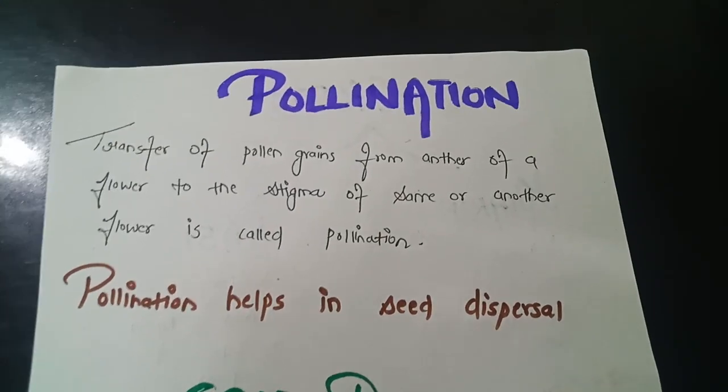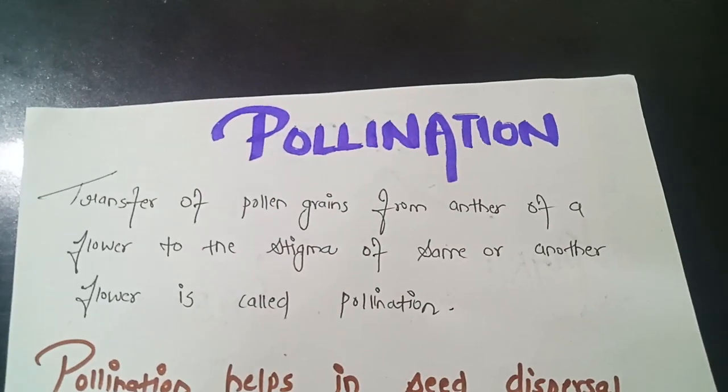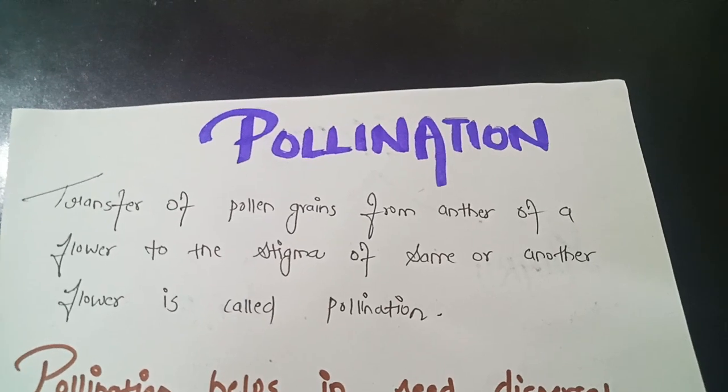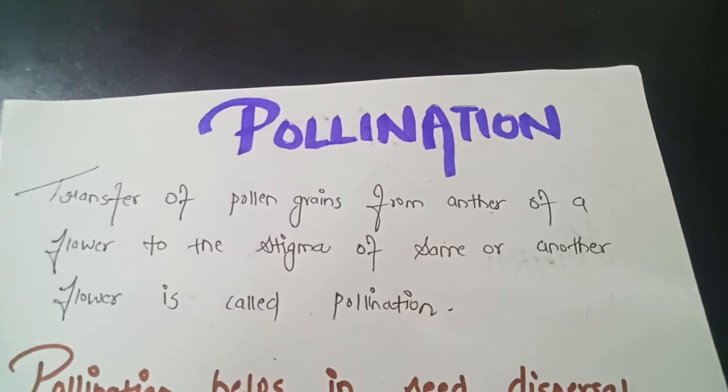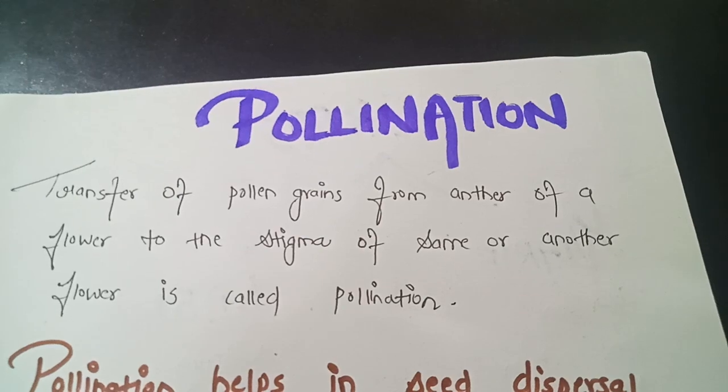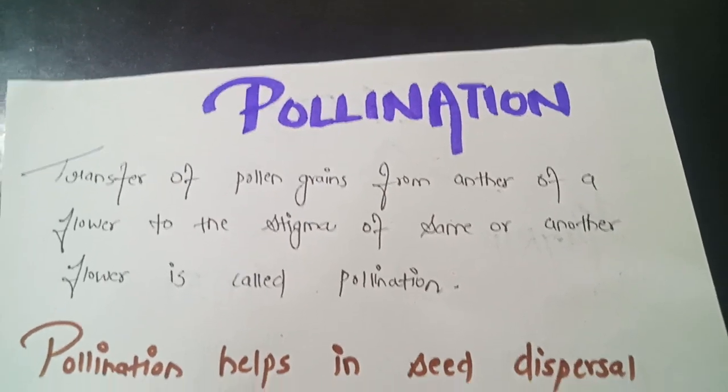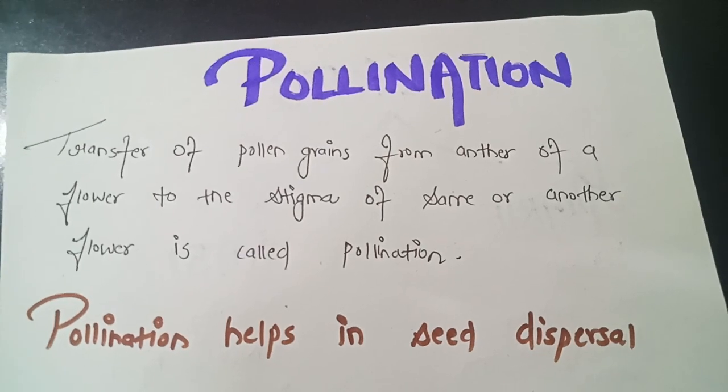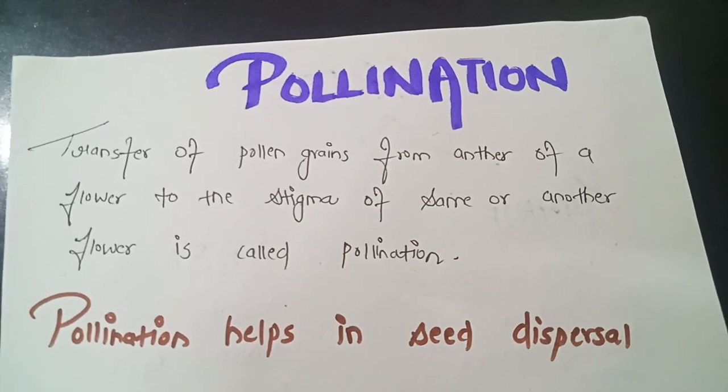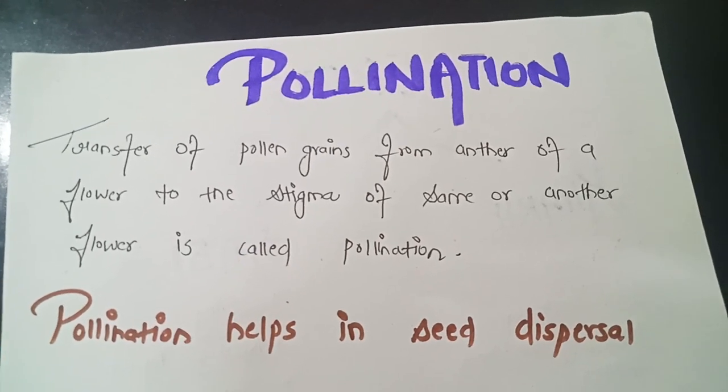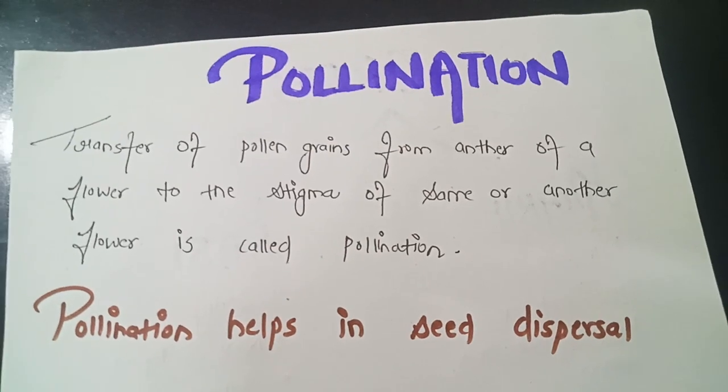So moving on to our next topic. It's pollination. Transfer of pollen grains from anther of a flower to the stigma of same or another flower is called pollination. And pollination helps in seed dispersal. So pollination is also very important in dispersal of a seed.